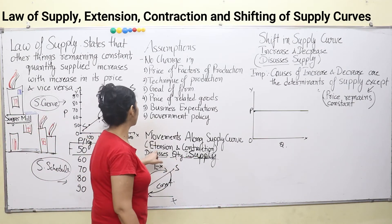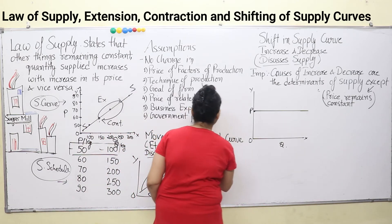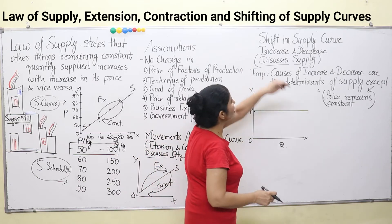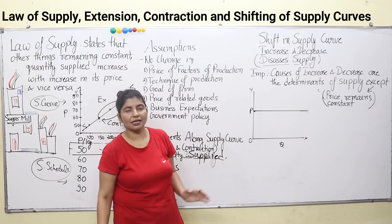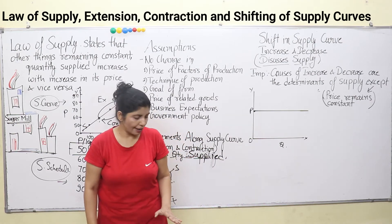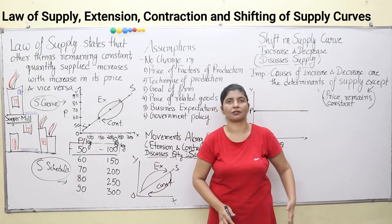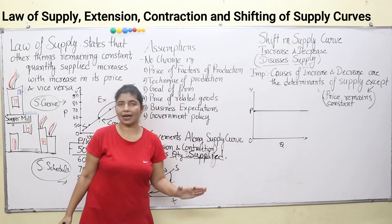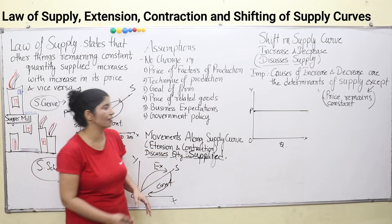Extension and contraction discuss quantity supplied. Quantity supplied is an individual quantity. Now, where the supply curve changes its position entirely, that is known as a shift in supply curve. For example, if your supply curve initially was here and now it moves forward — this is a shift. If it moves backward, this is a leftward shift, and moving forward is a rightward shift.